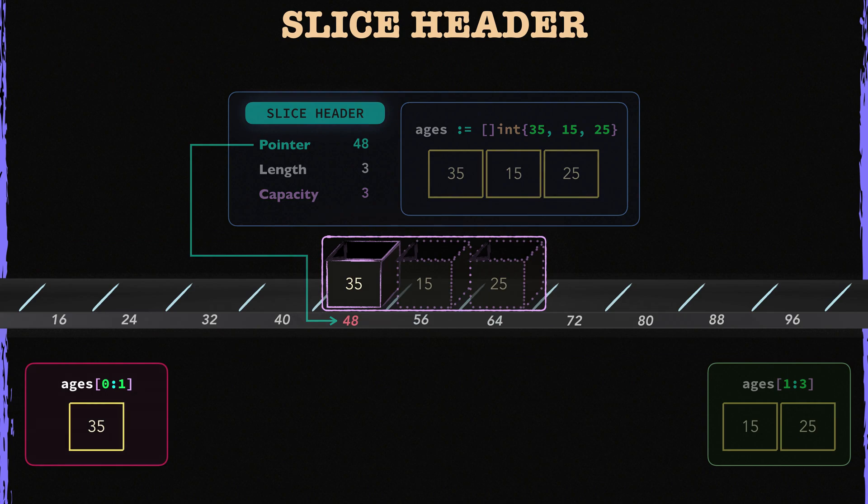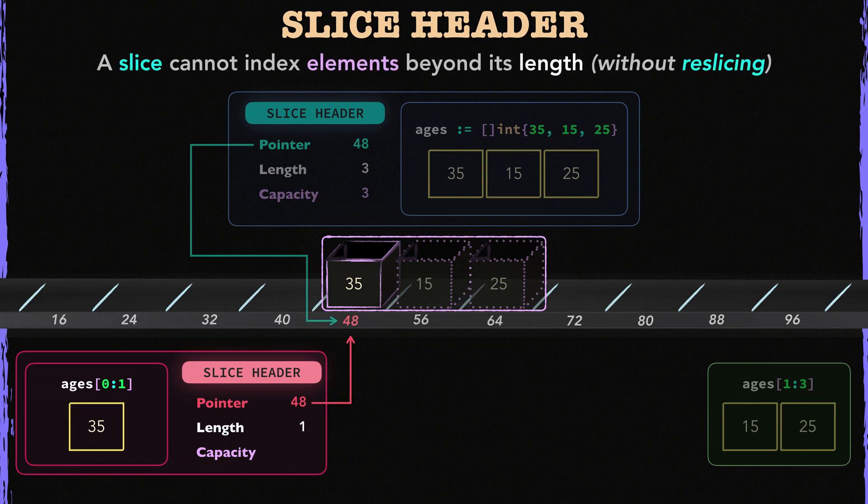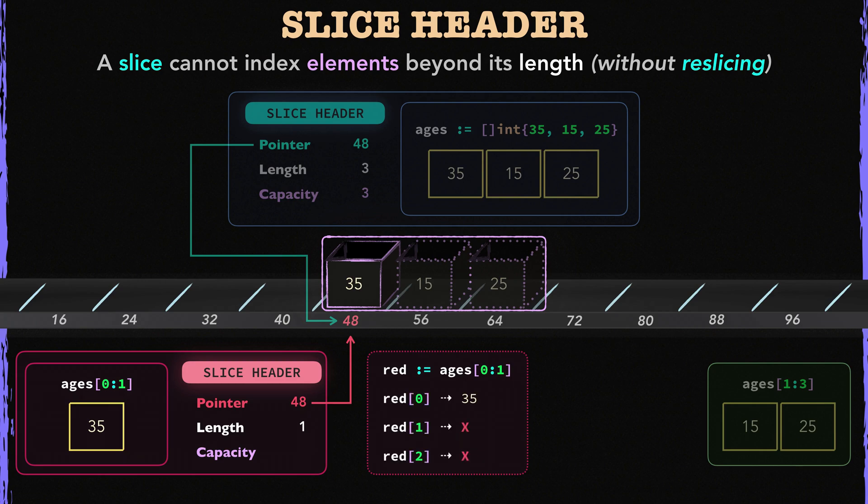Let's take a look at the red slice's slice header. Its pointer field is also 48, so it looks at the first element of the array. This time, its length field is 1, because it has only one element, so it cannot access the rest of the elements in the array for now. For example, let me try to index the slice's elements. As you can see, I can only index the first element, not the rest of them. They are hidden inside its backing array.